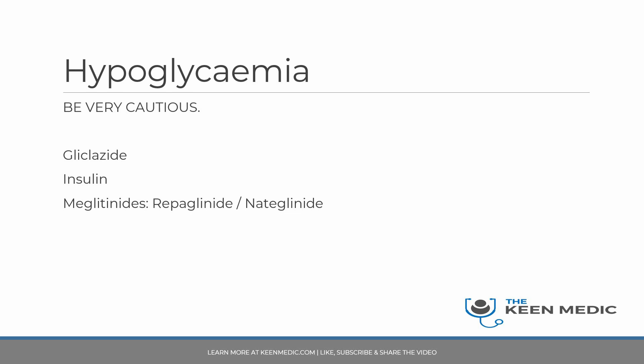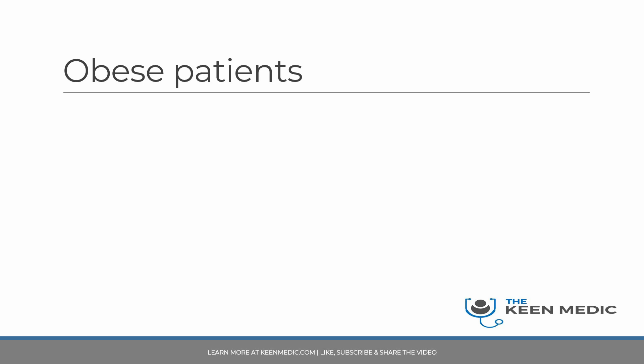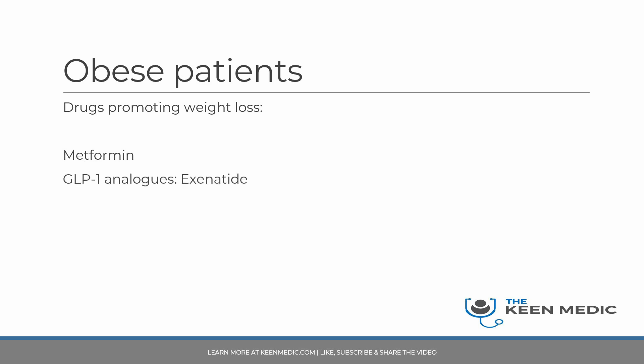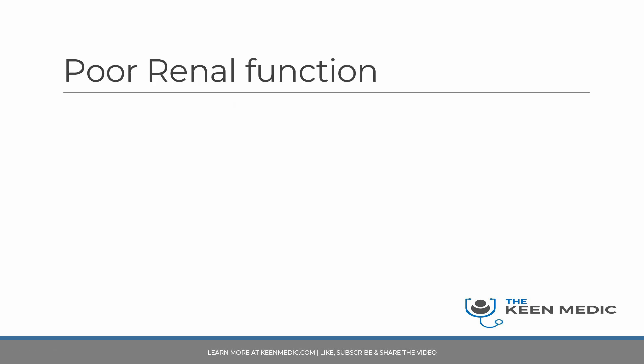For obese patients, you should think about which agents may also help with weight control. You want to prioritize agents that aid both diabetes sugar control and potential weight loss. These include our good old friend metformin, which essentially everyone should be on, and GLP-1 analogs — though as a medical registrar not working in endocrinology, you won't typically be starting someone on GLP-1 analogs; that would be the endocrinologists.